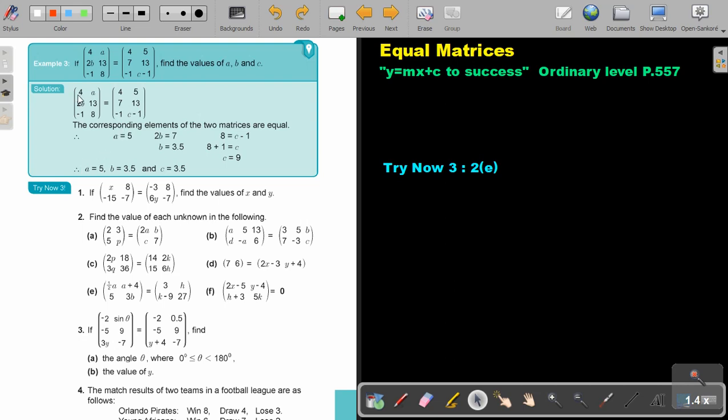So by equating the elements, I find that the value of A is 5, the value of B is 3.5, and the value of C is 3.5. Wait, the value of C is not 3.5, there's a mistake. Let me correct it. The value of C will be equal to 9.